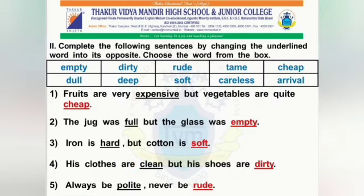Second question: complete the following sentences by changing the underlined word into its opposite. Choose the word from the box. First: fruits are very expensive but vegetables are quite cheap. Second: the jug was full but the glass was empty.